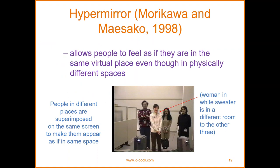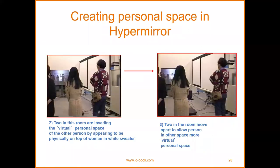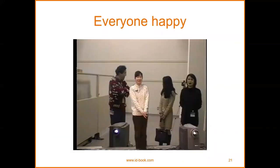People in different places are superimposed on the same screen to make them appear as if in the same place — virtual backgrounds. The woman in the white sweater is in a different room from the other three. Creating personal space in a hypermirror — two in the room are invading the virtual personal space of the other person by appearing physically on top of the woman in the white sweater. The two in the room move apart to allow the person in the other space more virtual personal space. Everyone is happy.